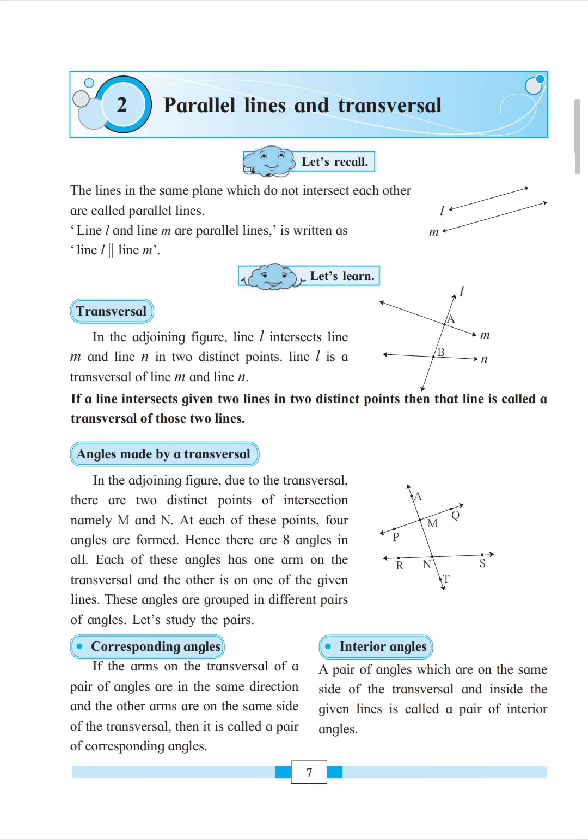The key thing about alternate angles is they are opposite to each other. Interior alternate angles are on the inside part and opposite. Exterior alternate angles are opposite but on the outside part.